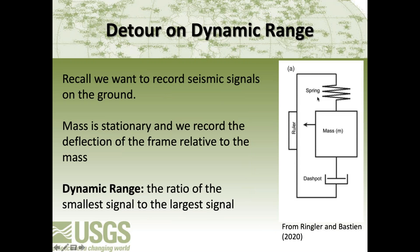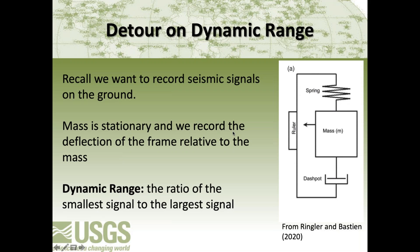Taking a small detour on dynamic range, we should briefly recall how a seismometer works. We're on the ground but want to record how the ground is moving, so we need some sort of inertial reference frame. The idea is that we have a suspended mass that doesn't move, but the frame relative to the mass does move. We might have a pointer and a ruler, and as the ground moves up and down, we watch our squiggles move on the ruler.